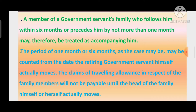Period of one month or six months, as the case may be, may be counted from the date the retiring government servant himself actually moves। The claims of travelling allowance in respect of the family members will not be payable until the head of the family himself or herself actually moves। After the movement of the retired employee within six months the family members can travel, and within one month before the movement the family members can also travel।